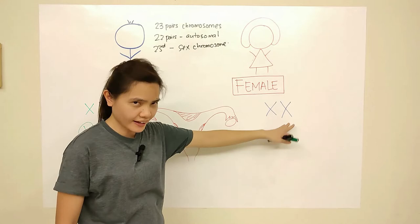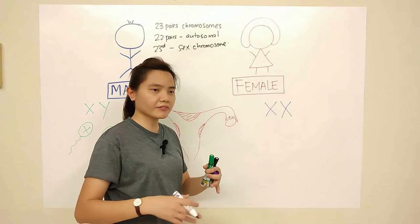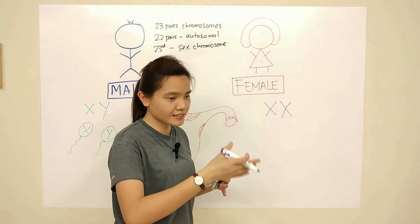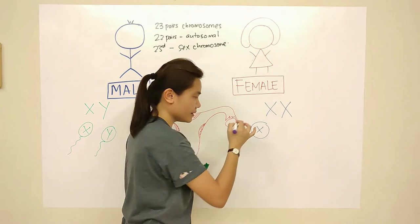For the female, there are only two X chromosomes. Every month, after the menstrual period, the female will produce one egg. This egg will be waiting for a sperm to fertilize it. If it is not fertilized, it will be shed off. So every egg will carry an X chromosome.